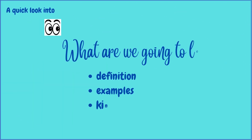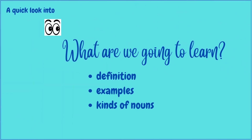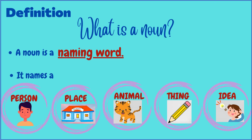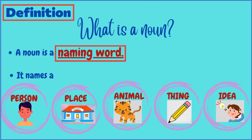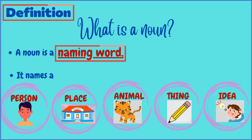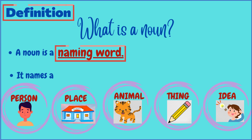We'll have a look at its definition, examples, and kinds. Coming to the definition — as you may know already, a noun is a naming word. It primarily names a person, place, animal, thing, or an idea.